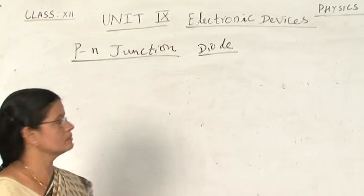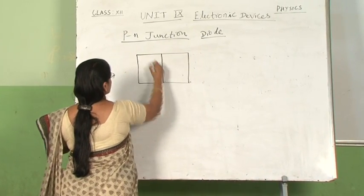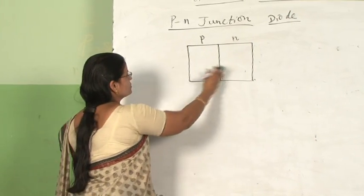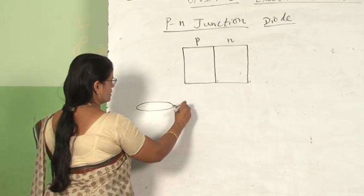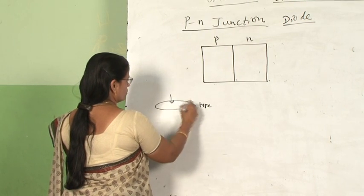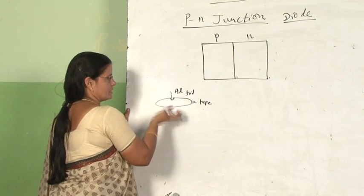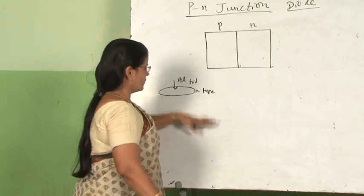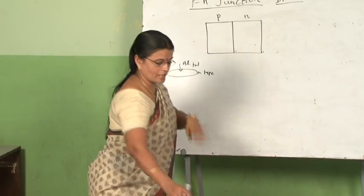The next topic is the P-N junction diode. A P-N junction is formed when a P-type and an N-type semiconducting material are fused together. For example, taking a wafer of N-type material and introducing an aluminium layer heated at high temperature produces a P-N junction. Similarly, introducing a pentavalent impurity into a P-type wafer also forms a P-N junction.